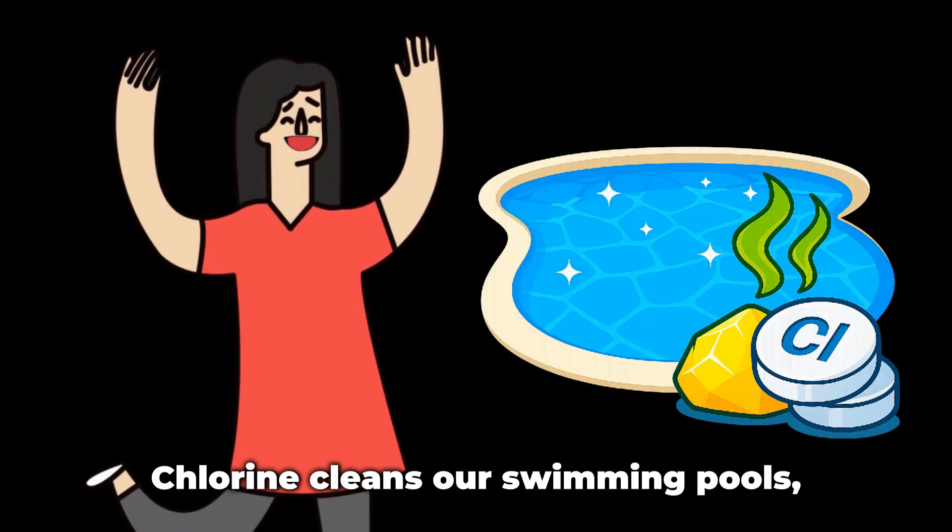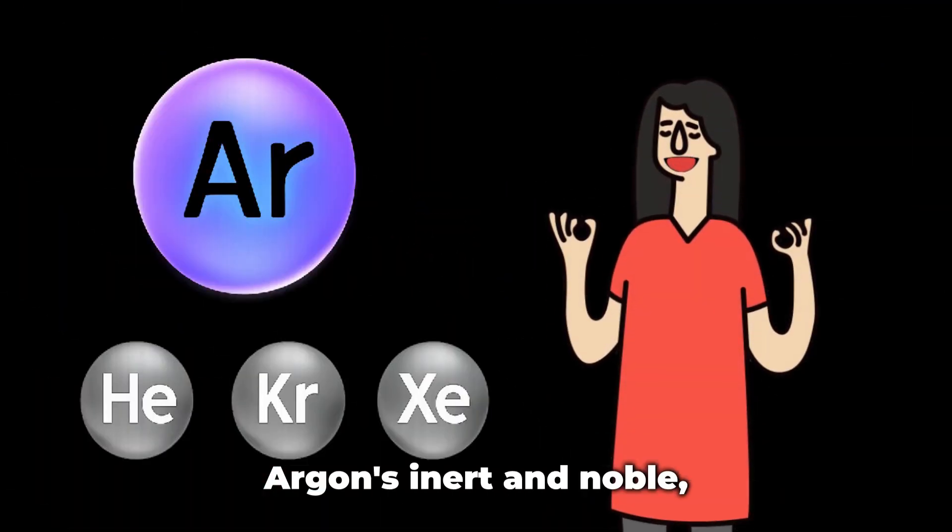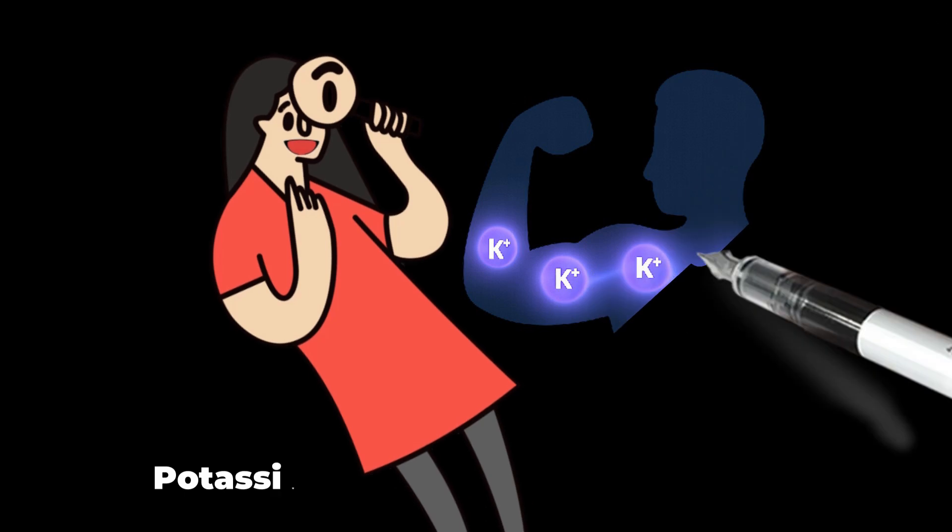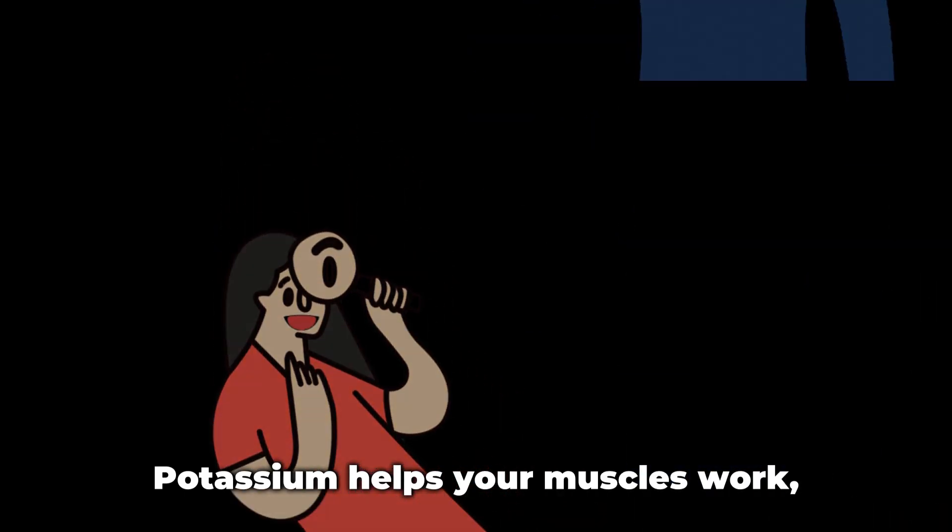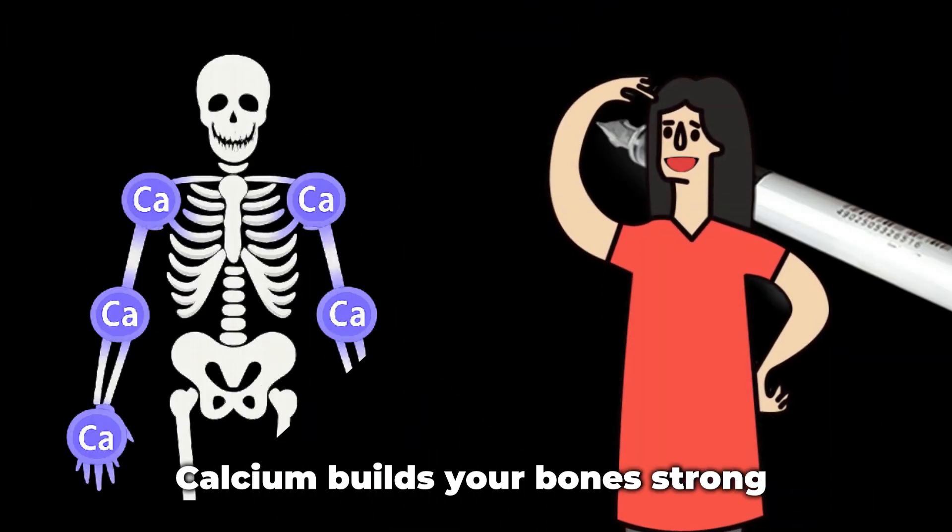Chlorine cleans our swimming pools. Argon and noble. Potassium helps your muscles work. Calcium builds your bones strong.